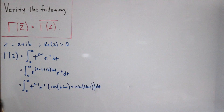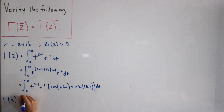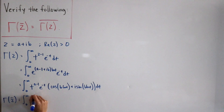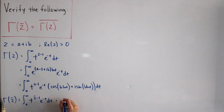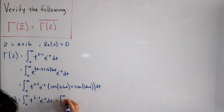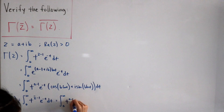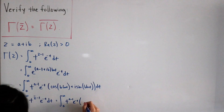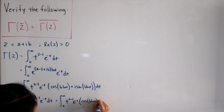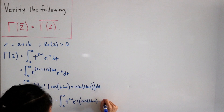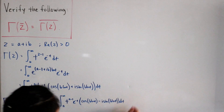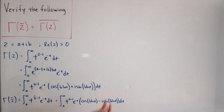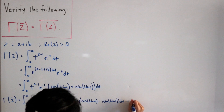Now we plug in the complex conjugate. So gamma of the conjugate of z is the integral from zero to infinity of t to the power of z-conjugate minus 1, times e to the negative t, dt. Expanding this out, the real part a minus 1 stays the same, but when we apply Euler's formula, the imaginary term becomes minus i times sine of (b ln t), giving us a sign change in the imaginary part.